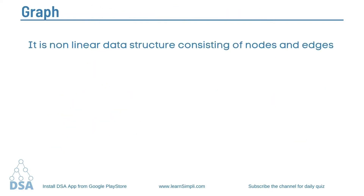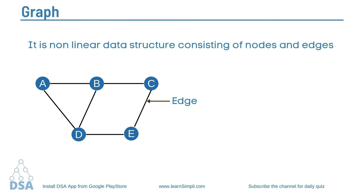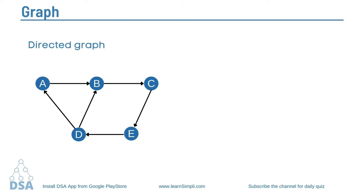Graph is a non-linear data structure consisting of nodes and edges. Nodes are called vertices, and a single node is called a vertex. Nodes are the data elements of the graph that are connected through edges. The link or connection between two vertices or nodes is called an edge. An edge can be unidirectional or bidirectional. If all the edges of the graph are unidirectional, then that graph is called a directed graph. If all the edges are bidirectional, then the graph is called an undirected graph.